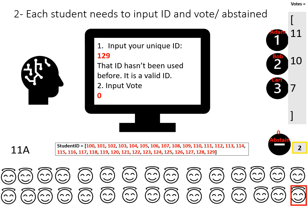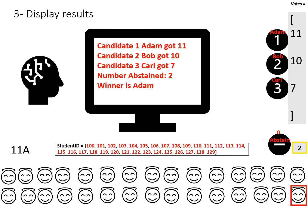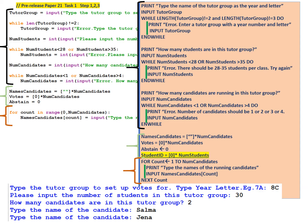It's time for the last part of task 1 and 2, which is to display the results. Candidate 1 Adam got 11, candidate 2 Bob got 10, candidate 3 Carl got 7 votes, and 2 abstained. The winner is Adam. We're going to look at the pseudocode for task 1 and task 2 combined, because task 2 is an extension to task 1.